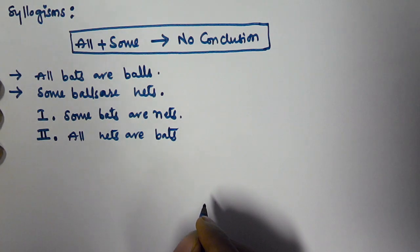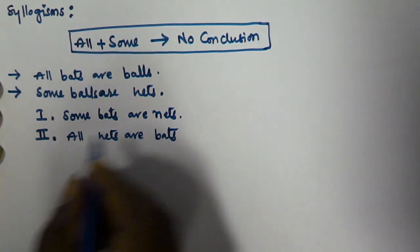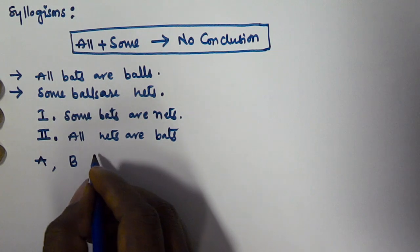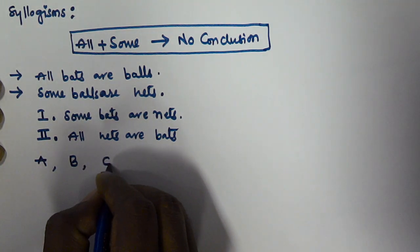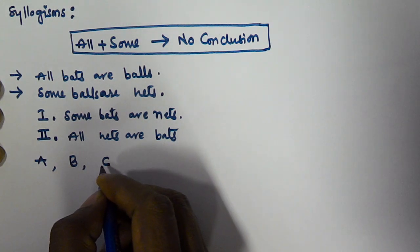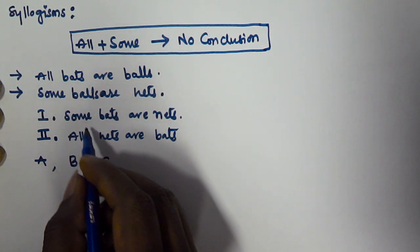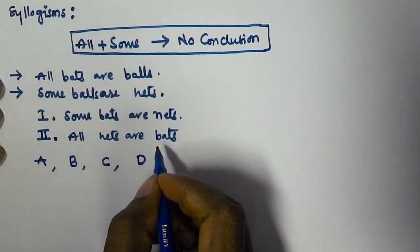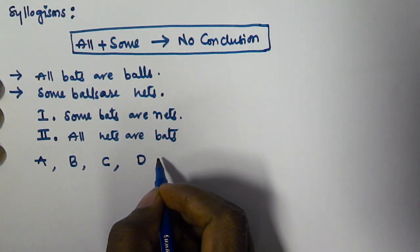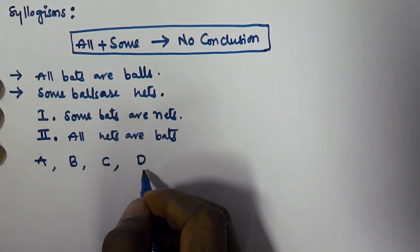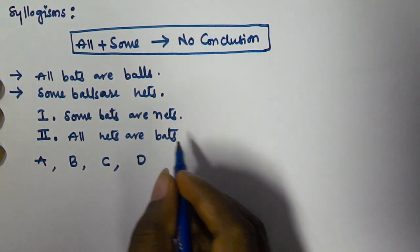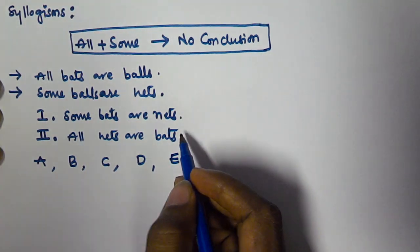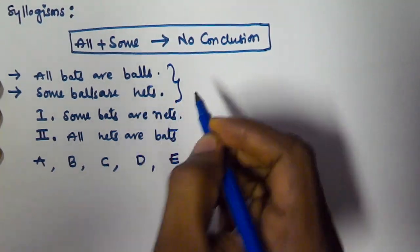If conclusion 1 alone is true, select option A. If conclusion 2 alone is true, select option B. If either conclusion 1 or conclusion 2 is true, select option C. If neither conclusion 1 nor conclusion 2 is true, select option D. Select option E if both conclusions are true.